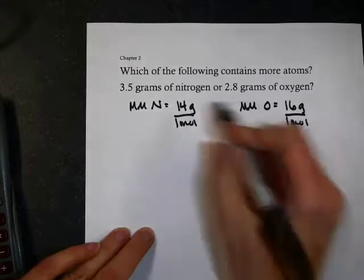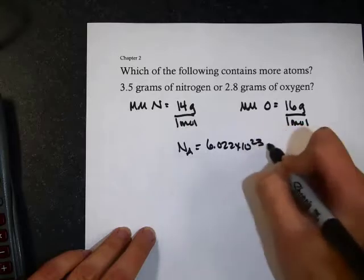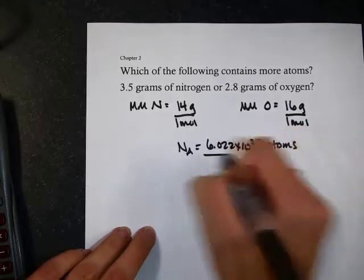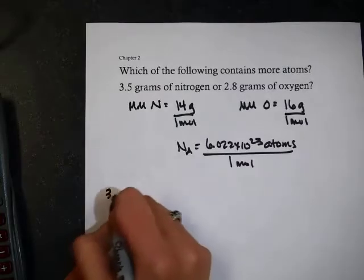All right, now I'll do each problem separately. Oh, I'm going to need Avogadro's number. Let me just write that down. 6.022 times 10 to the 23rd, and that's how many atoms are in one mole. All right, so now two separate problems.